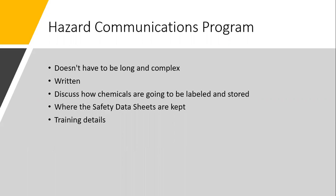In that written plan, discuss how those chemicals are labeled and stored within your organization. Where are the safety data sheets kept? You need to discuss in your written plan where those are stored. They're called safety data sheets, but often referred to as SDSs. And finally, training details — in your written program, document how you are training, when you trained, and the specifics of your hazard communications training.